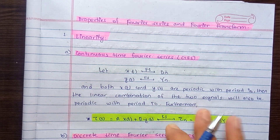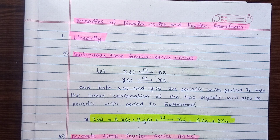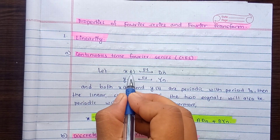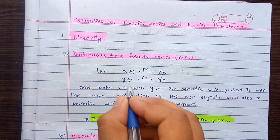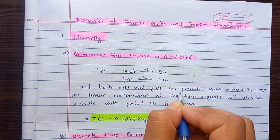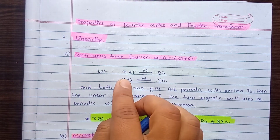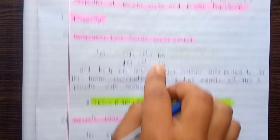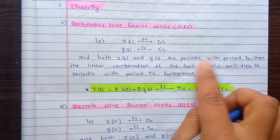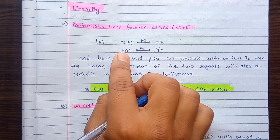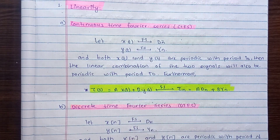For the Fourier Series: Xt is the input signal, and the Fourier Series representation gives Dn as the output. Similarly, Yt is an input signal with Yn as the output. If both Xt and Yt have period T0, then they are a linear combination of two signals, and the output is also periodic with period T0.